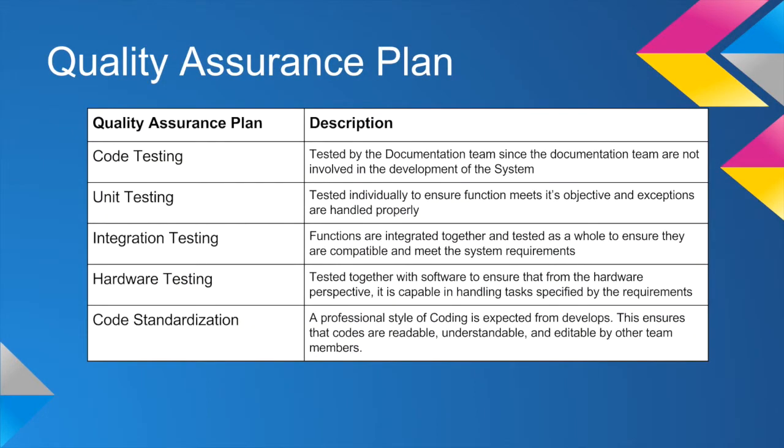This is the quality assurance plan. There are five main categories: code testing, unit testing, integration testing, hardware testing, and code standardization.